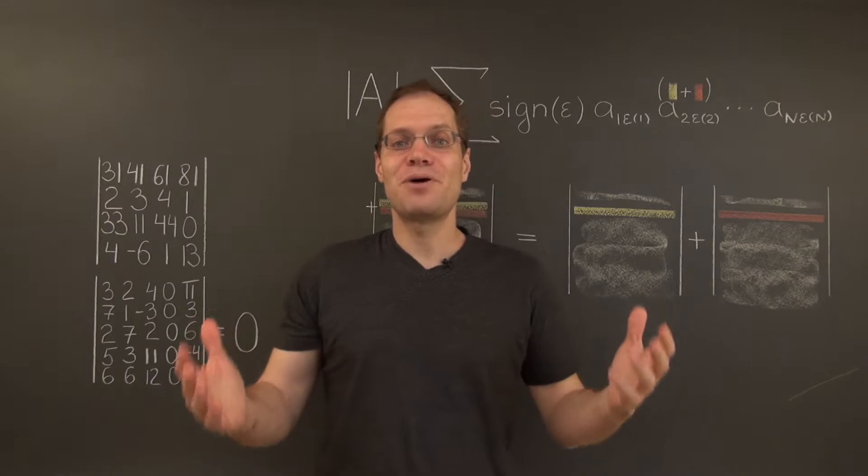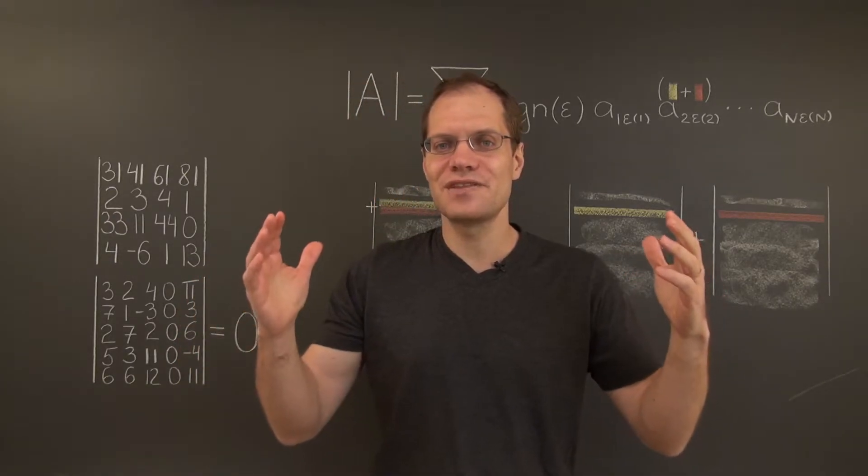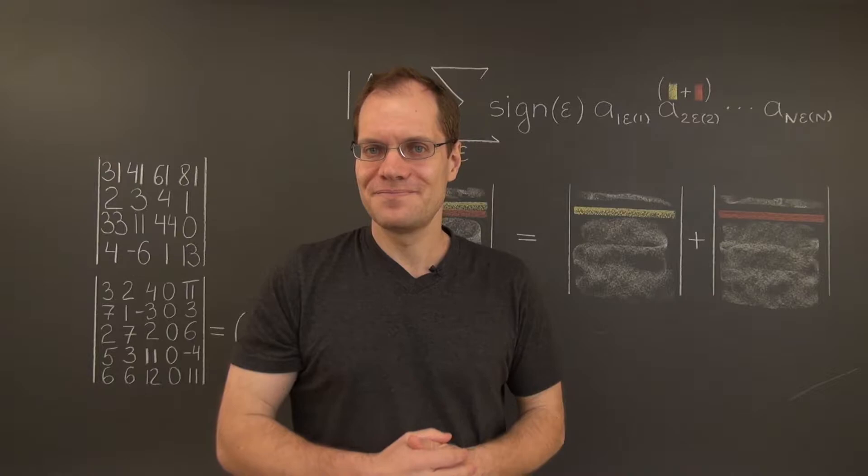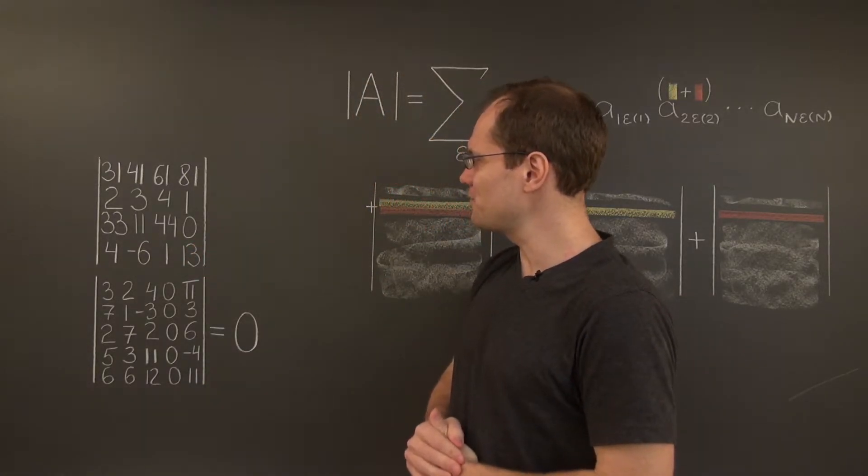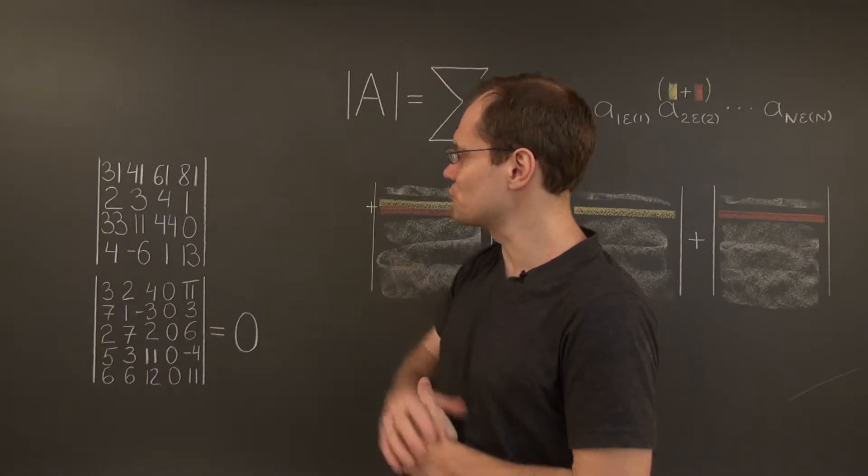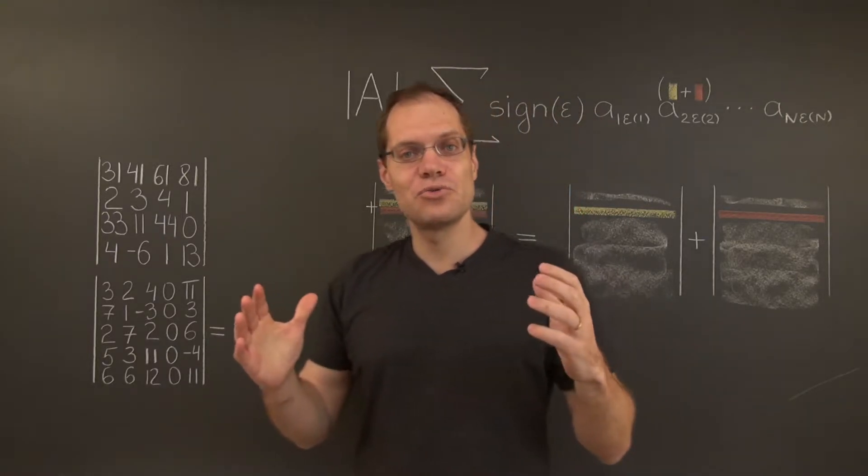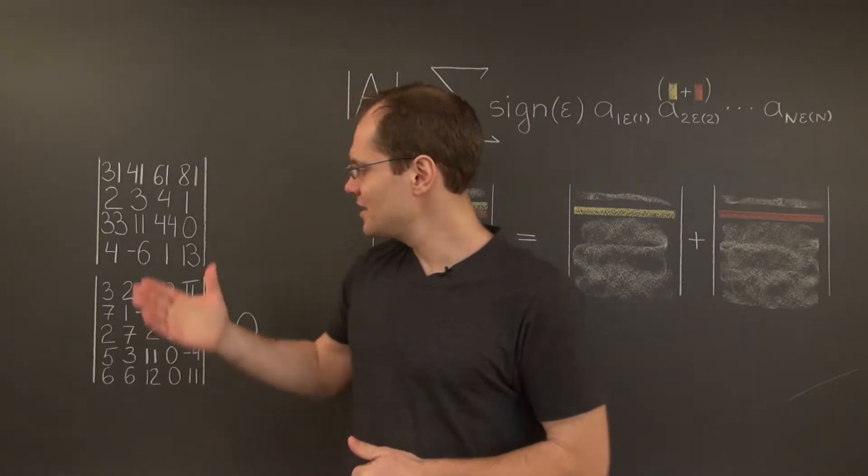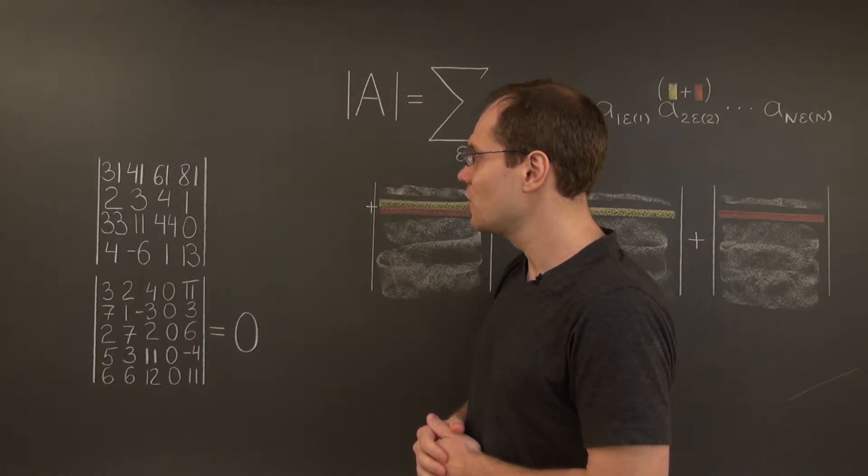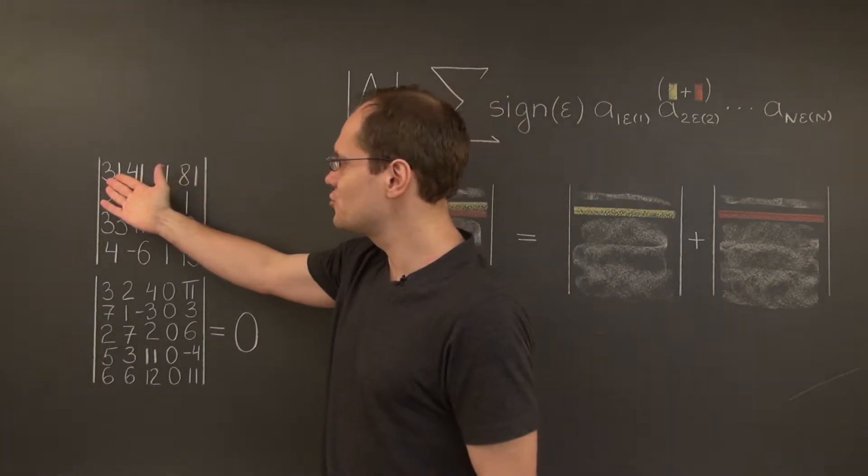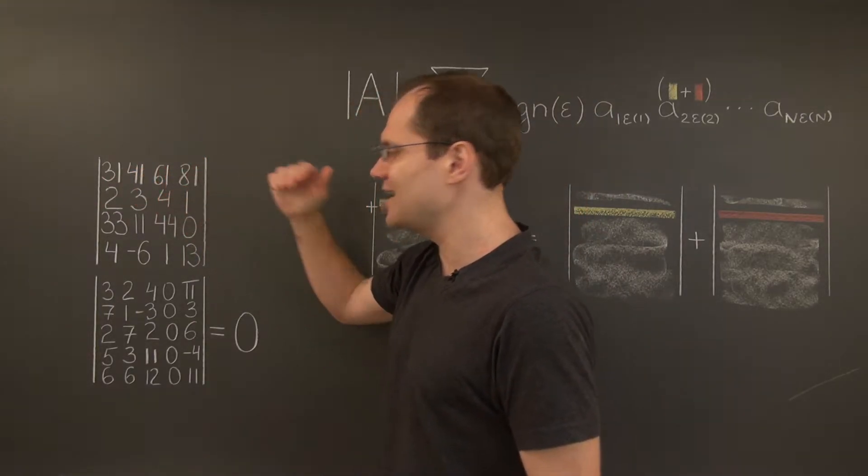So the first part of linearity reminds us very much of the common distributive law. Let's consider an example. Direct your attention to this 4x4 matrix, and look at its first row. According to part 1 of linearity, this determinant equals the sum of two determinants, where the first row of the first determinant reads 30, 40, 60, 80,